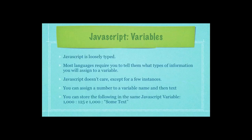JavaScript is loosely typed. What this means is most languages require you to tell them what types of information you will assign to a variable. JavaScript doesn't care, except for a few instances. You can assign a number to a variable name and then assign a text value to that same variable name and not throw an error. For example, you can store the following all in the same exact JavaScript variable.